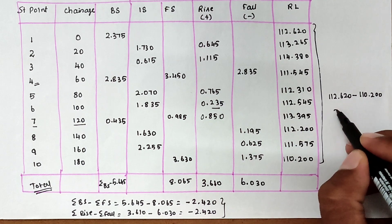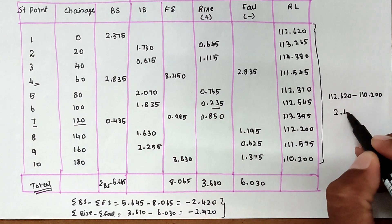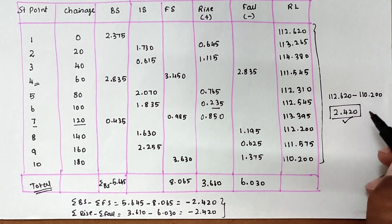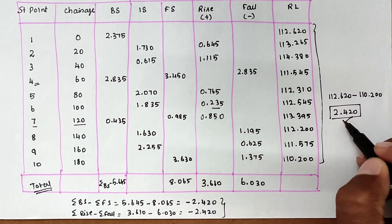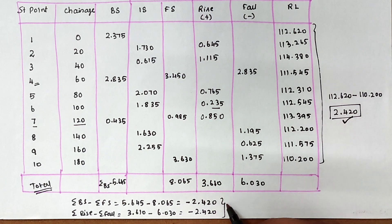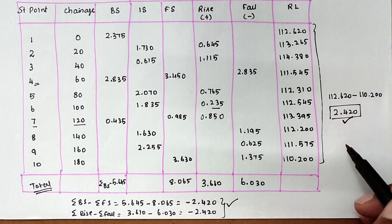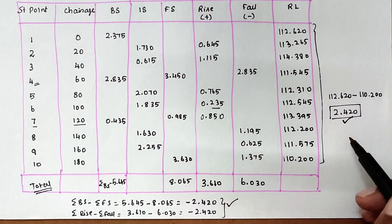We got the value of 2.420, which matches our earlier check value of 2.420. This confirms the solution. This is how we solve the rise and fall problem. We will see the next video — thank you.